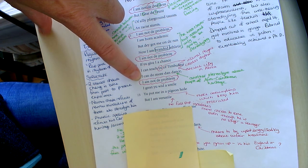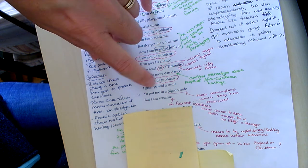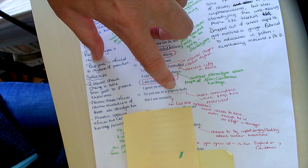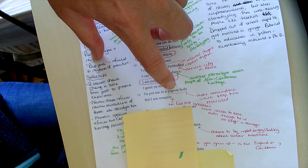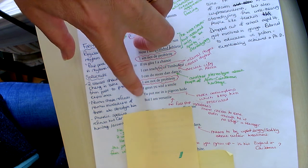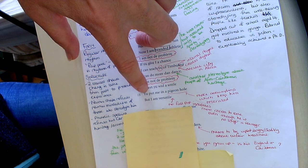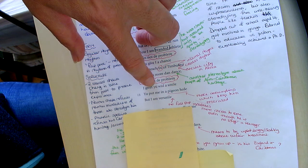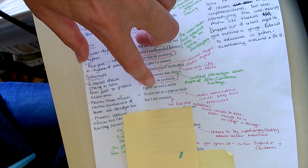And then we have the final quatrain in the first stanza. I am not a problem, I greet you with a smile, you put me in a pigeonhole but I am versatile. Now when you put something in a pigeonhole or put a person in a pigeonhole, you keep them restricted, you make assumptions about them which box them in, stop them from developing in the way they want to.